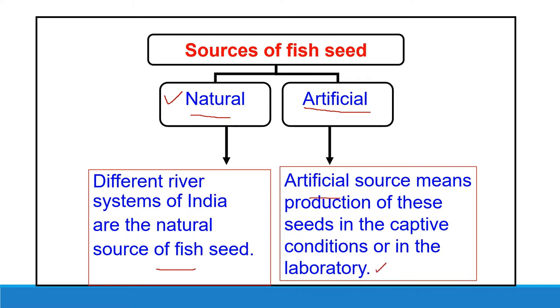Such places are known as hatcheries. When we breed a fish in captivity and collect eggs or different larval stages from there, we call it an artificial source.